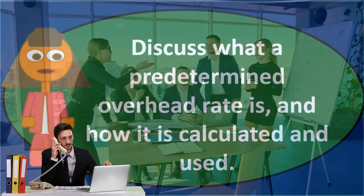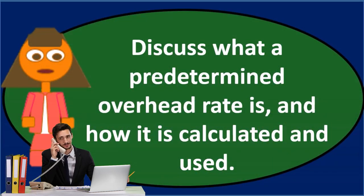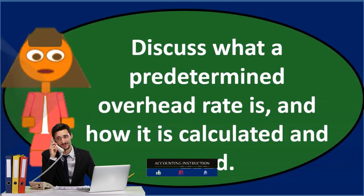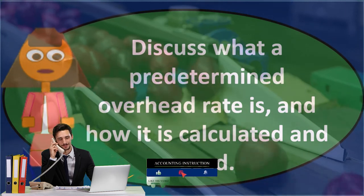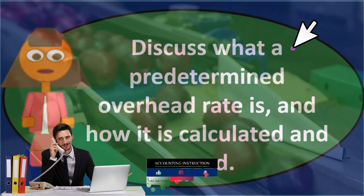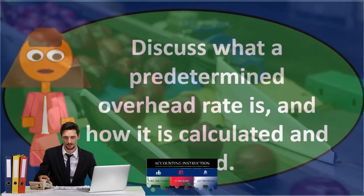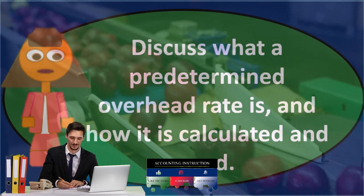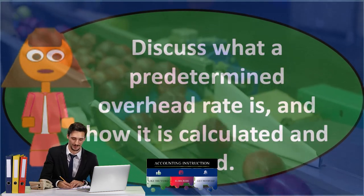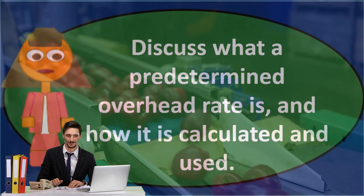We could start by thinking: it has something to do with overhead. Overhead typically has something to do with production, so we might want to start there. We could ask: how does overhead fit into production? How might we use a rate? What is overhead? By starting there, even if we don't know exactly where we're going, that might earn us some points on an essay question.